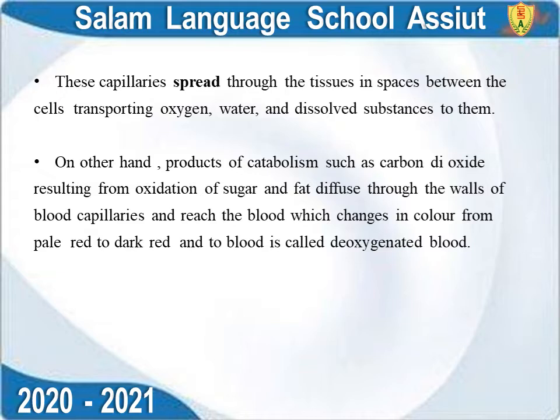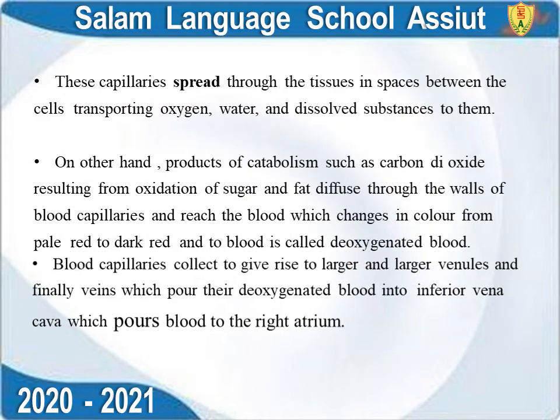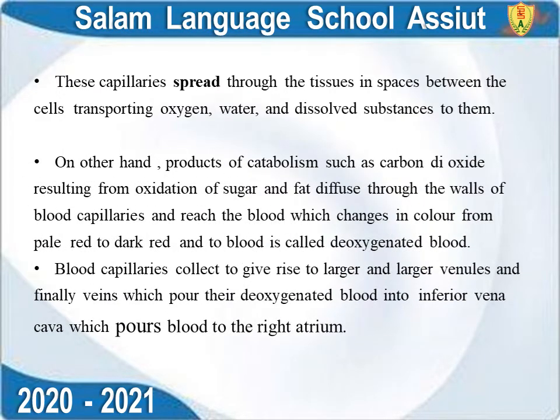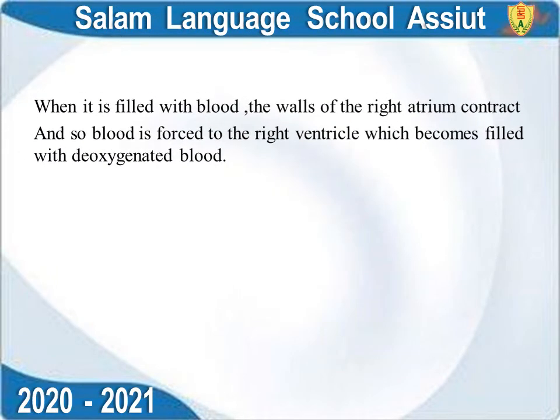Products of catabolism such as carbon dioxide, resulting from oxidation of sugars and fats, diffuse through the walls of blood capillaries into the blood. Deoxygenated blood collects into larger and larger venules and finally veins, which pour their deoxygenated blood into the inferior vena cava.